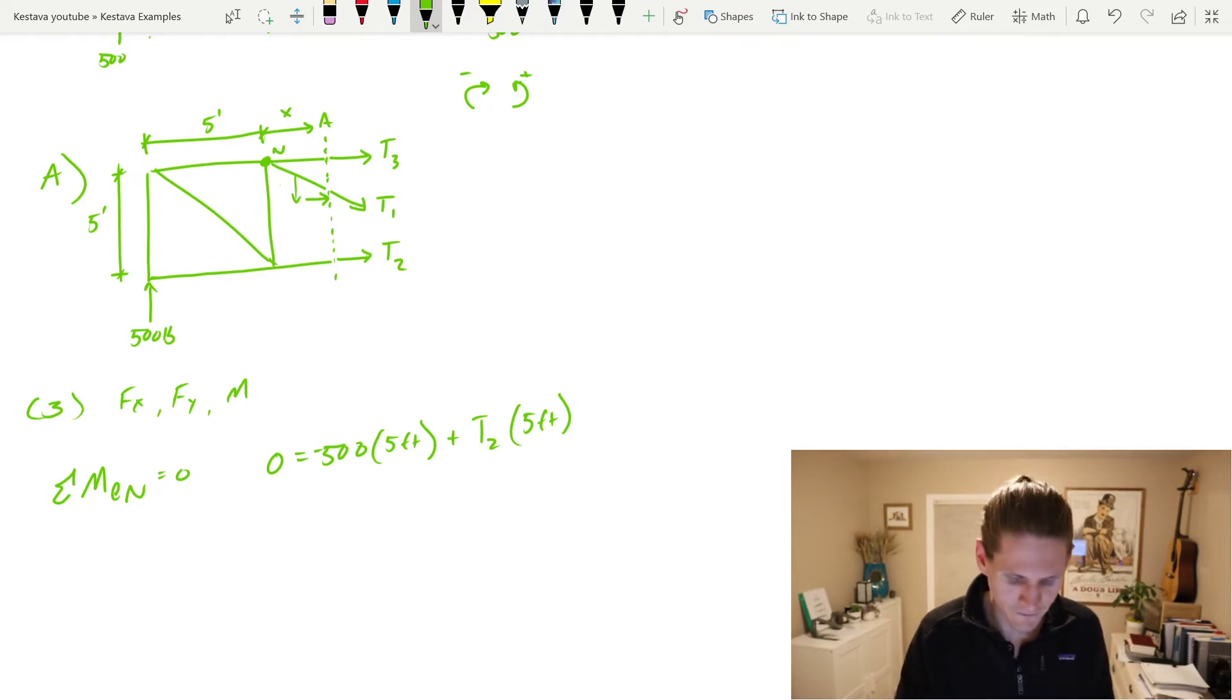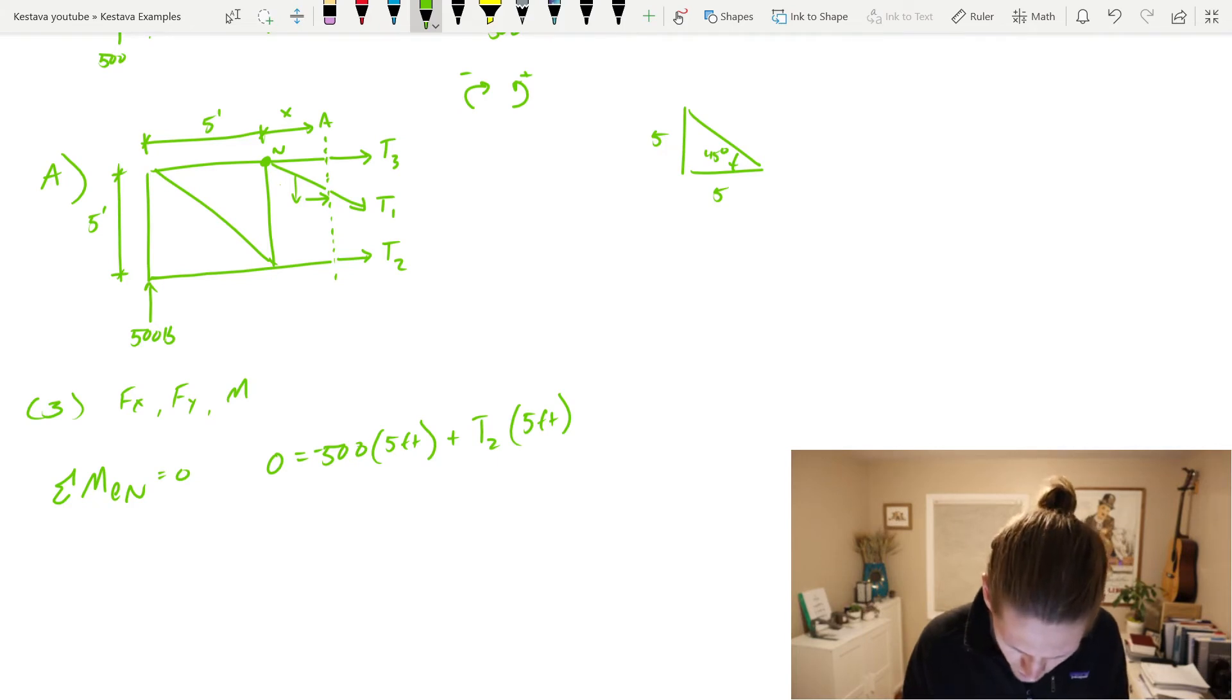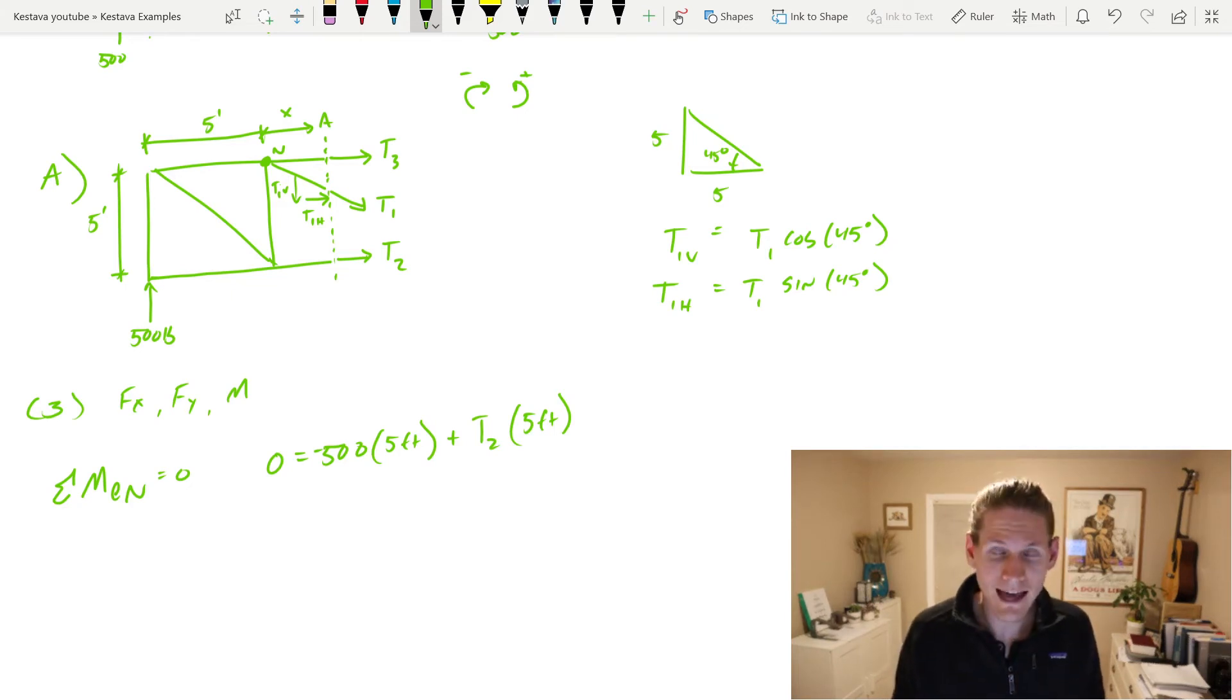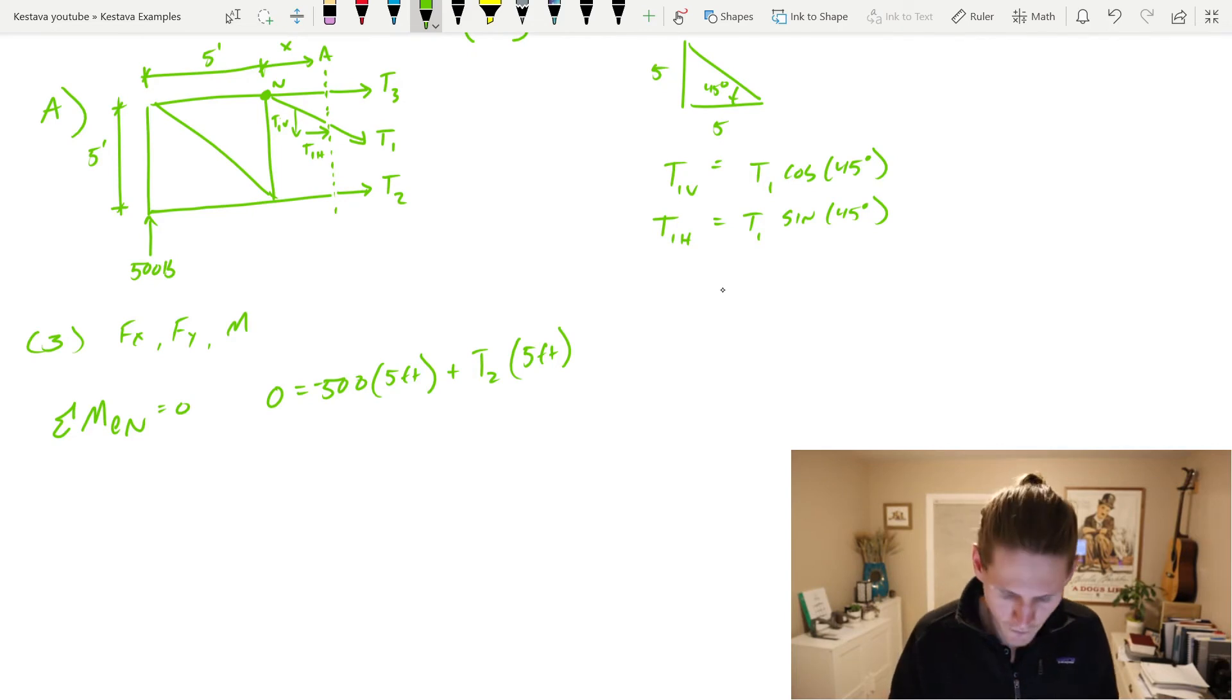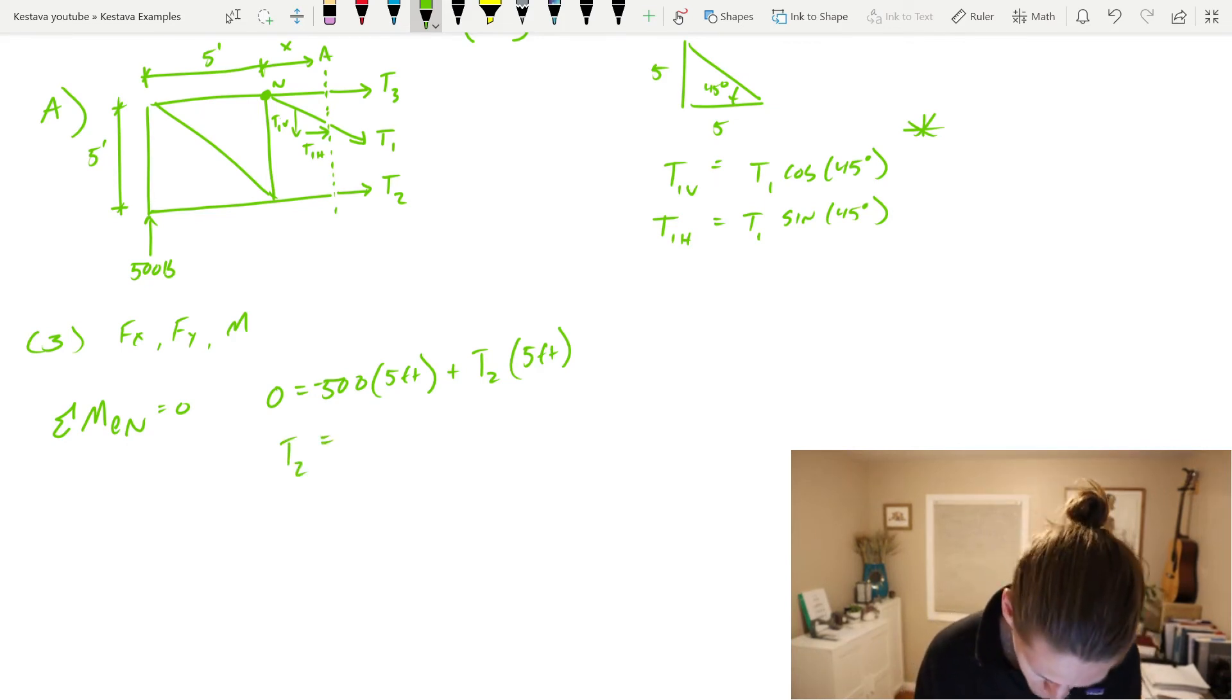And our question is ultimately looking for T3. First, I'm going to take summation of moment at point N equals zero. And I'm going to say N is right there. The reason I chose here is because you have multiple intersections of unknown forces, and that way they'll get crossed off so that you can hopefully be left with just a singular unknown that you could then solve for. So zero equals negative 500 times five feet plus T2 times five feet. But we still have a horizontal and vertical component of T1. Since we have a five foot tall truss and five foot bays, we know that we have 45 degree angles for all of our internal angles of our members. T1 vertical is going to equal T1 cosine 45 degrees. And T1 horizontal is going to equal T1 sine 45 degrees.